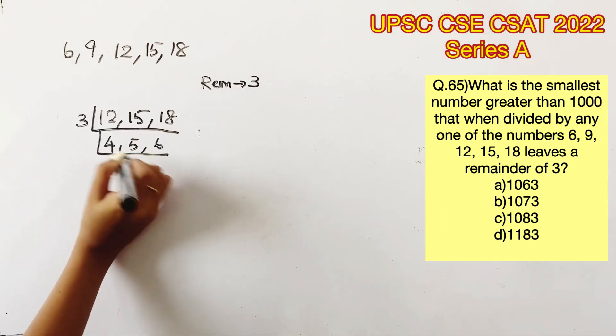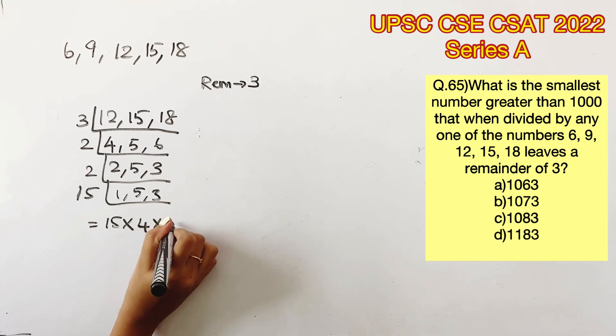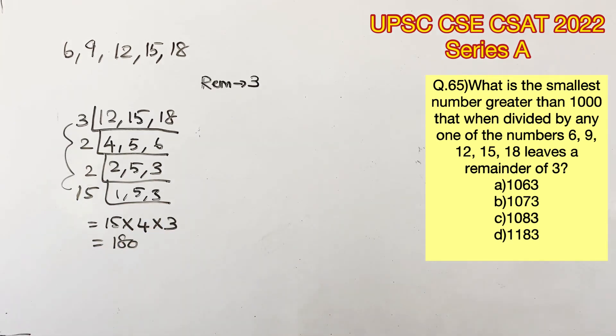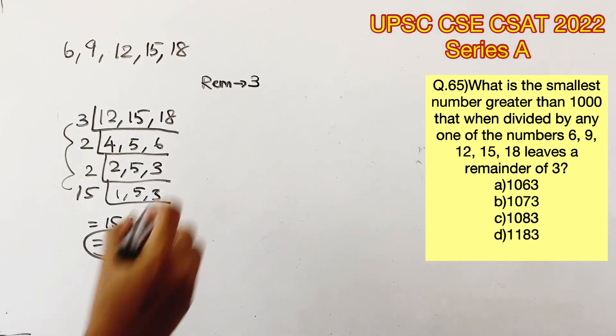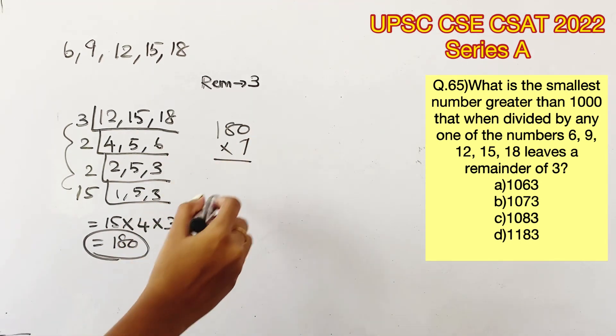Taking LCM, we get 15 × 4 × 3, which is 180. Now all we have to do is find out the least four-digit multiple of 180. Let's check with 180 × 7, which gives us 1260.